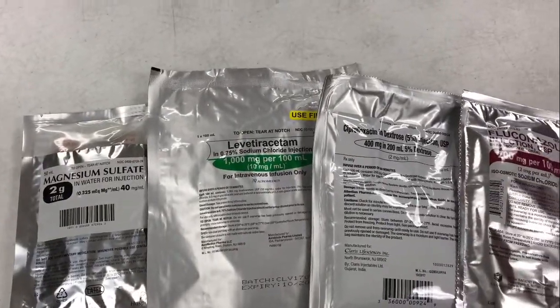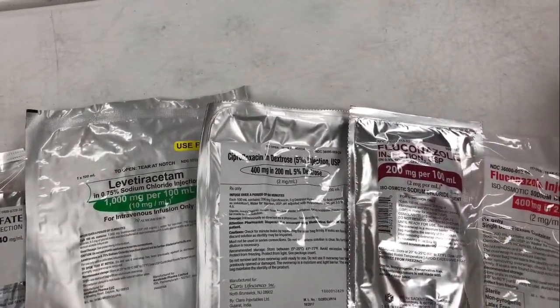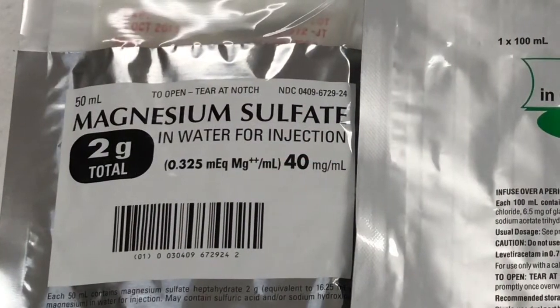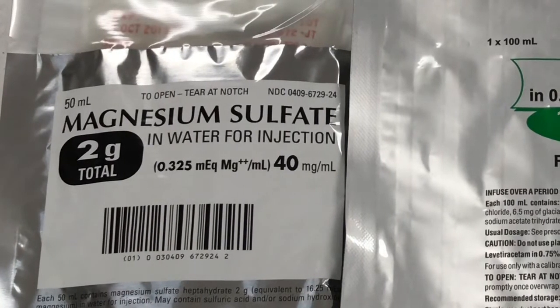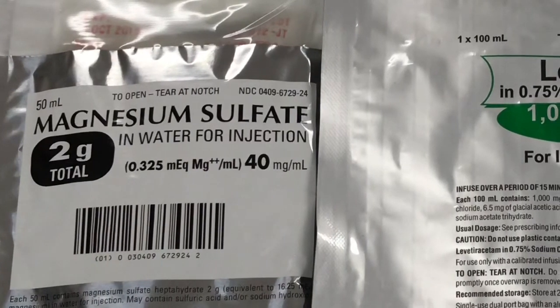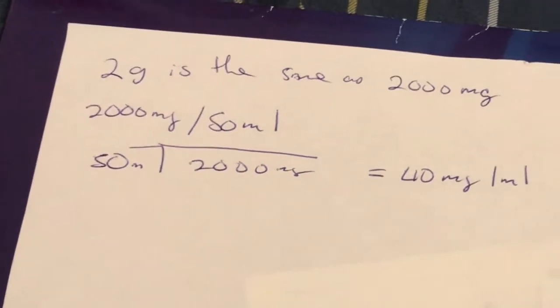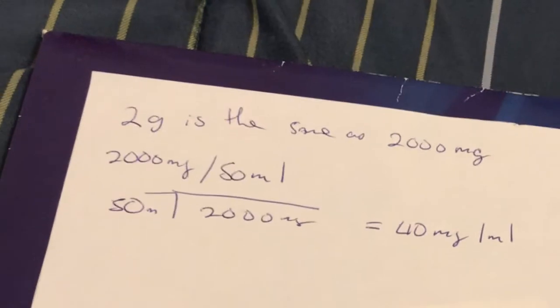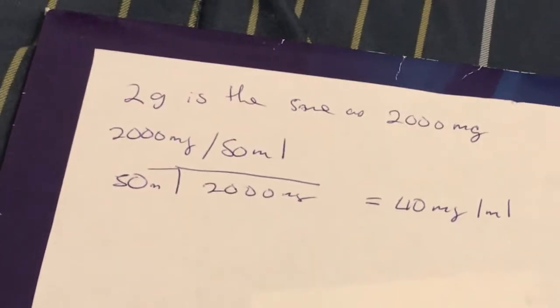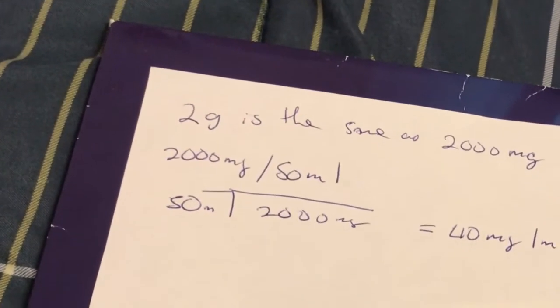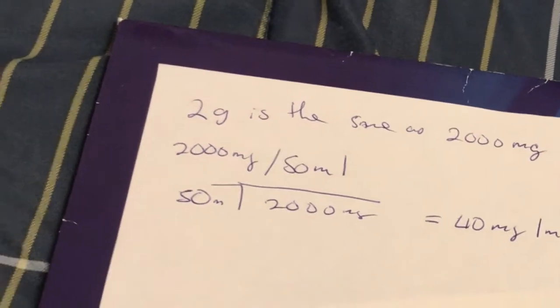Okay guys, here are some ready-to-use IV bags. Ready-to-use just means these bags come with a specific dose and specific volume. Let's do some basic calculation. First up, we've got magnesium 2 gram total. Look right above the word magnesium — it says 50 mLs. And right below where it says injections, it says 40 mg per 1 mL. Let's see if we can figure this maths out. First of all, you have to know your conversions — your liters, your milligrams. Google it, study it, memorize it.